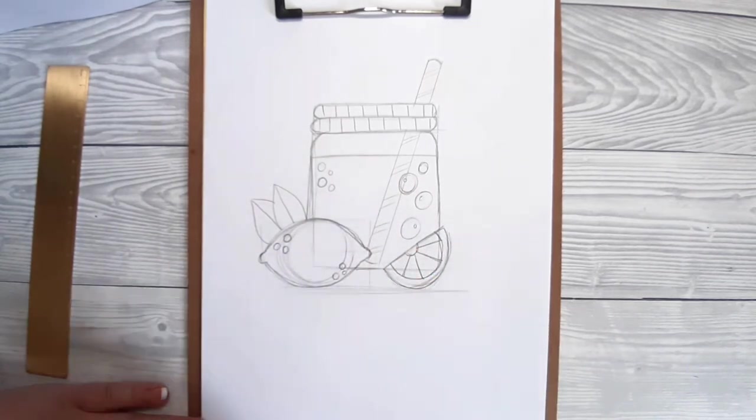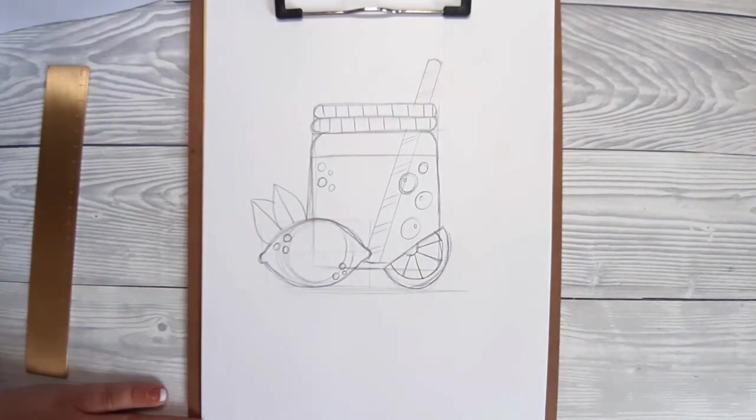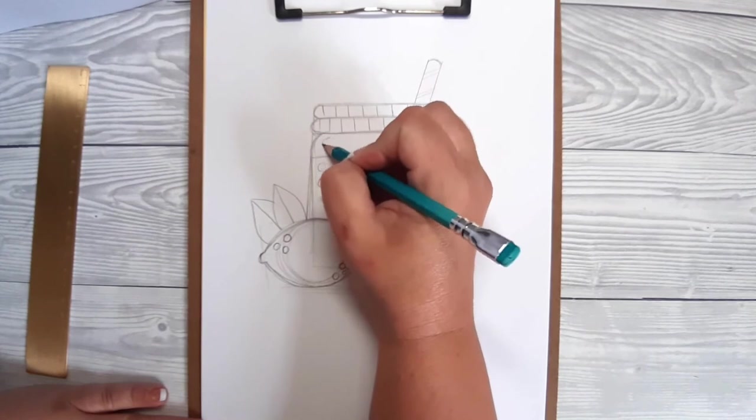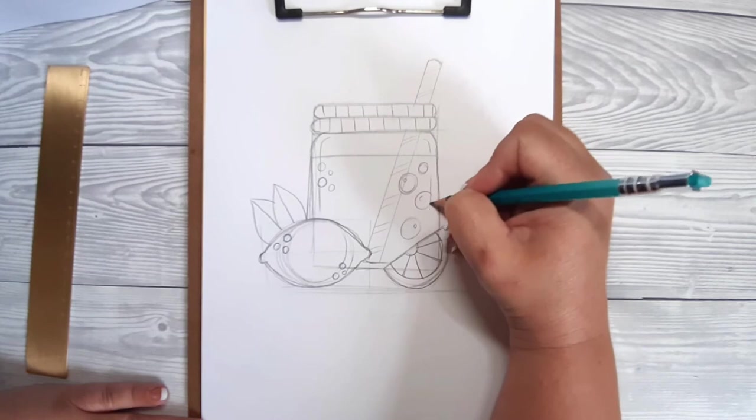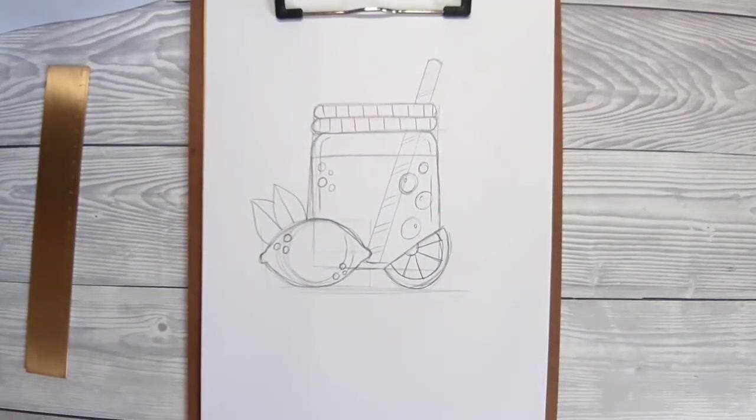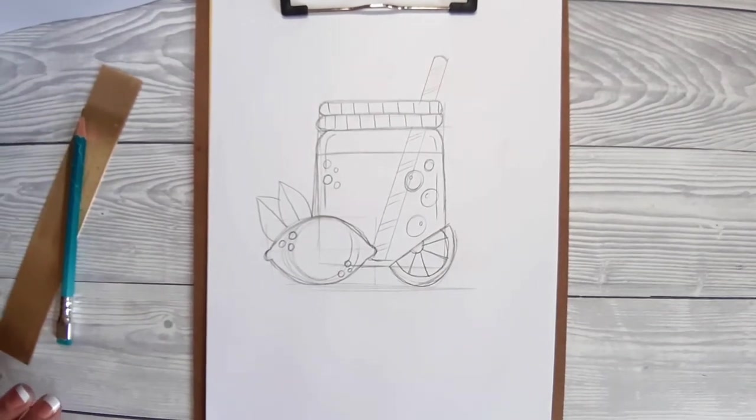Again, as this isn't a realism drawing we're not going to distort the straw under the liquid, so it's fine just to use a bit of artistic license on what should be happening in this picture. A few lines down each side just gives a more 3D look to the jar, and that's your pencil sketch finished.